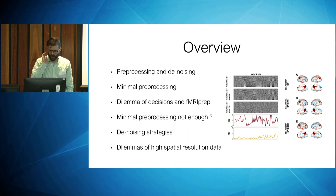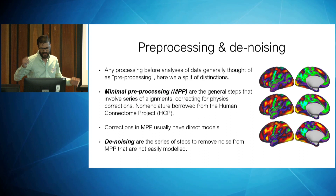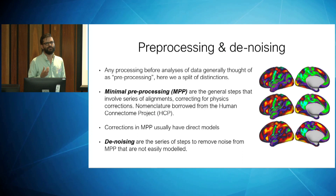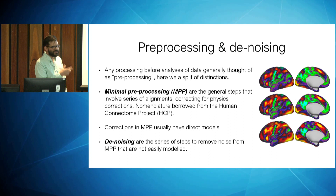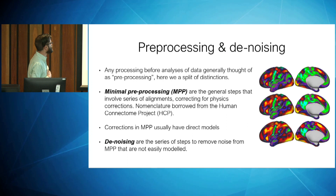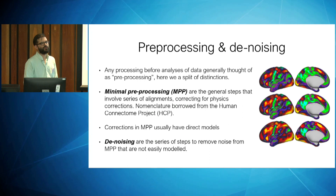Any pre-processing before analysis is essentially pre-processing, but I'm splitting it into two parts. The minimal pre-processing step — otherwise called MPP — are general steps everyone agrees on, with clearly defined physical models on how to process your data. For example, in the Human Connectome Project, they call these the minimal pre-processing pipelines. The next step after MPP is an additional step called denoising, where you take the time series and try to remove noise that's not easily modelled by clearly defined physical effects.